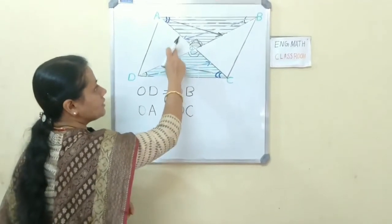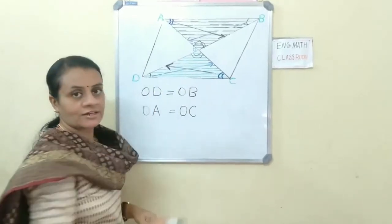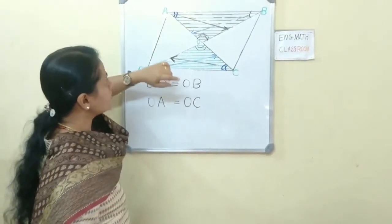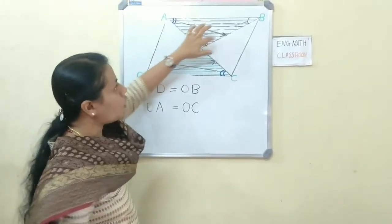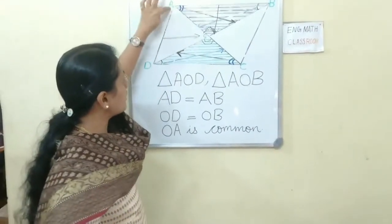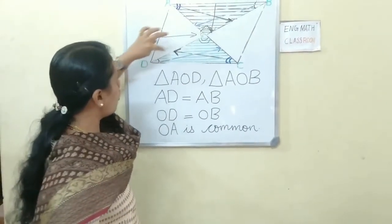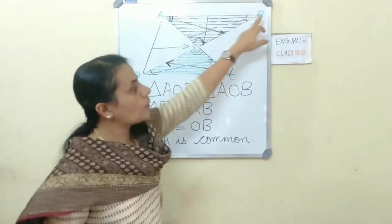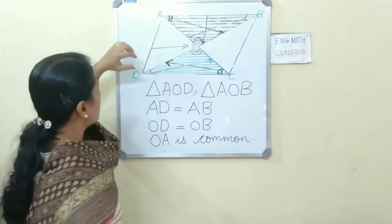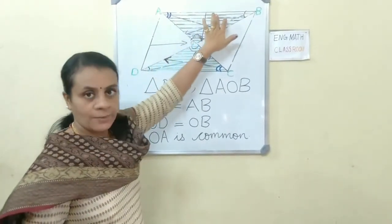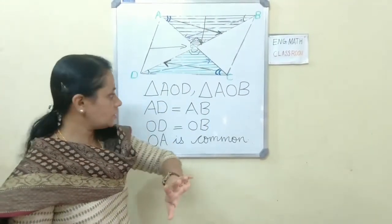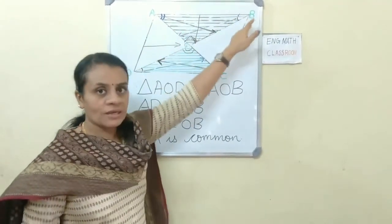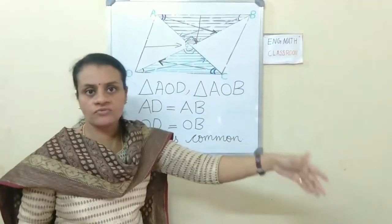Now we have to show each diagonal is a perpendicular bisector. We have to show that the angle made by these bisectors is 90 degrees. For that, consider triangles AOD and AOB. From triangle AOD and triangle AOB: AD equals AB — it is given in the question. Also, OD equals OB — we just found that.